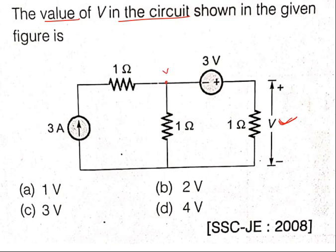This is a node — if more than two branches are interconnected, we can say it is a node. Here, three branches are interconnected, so this is one node and this is another node. This node will act as a ground. At the other node we can get an equation by applying KCL, which means Kirchhoff's Current Law: the sum of currents entering the node equals the sum of currents leaving the node.